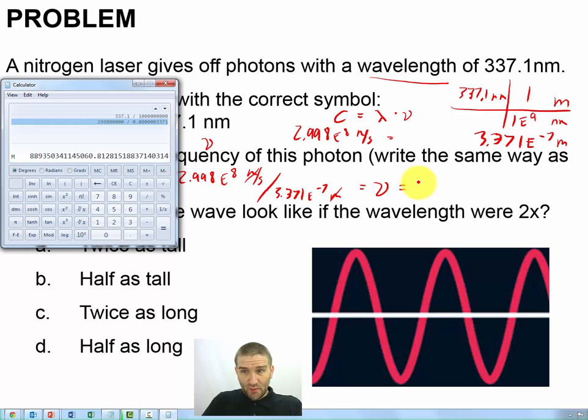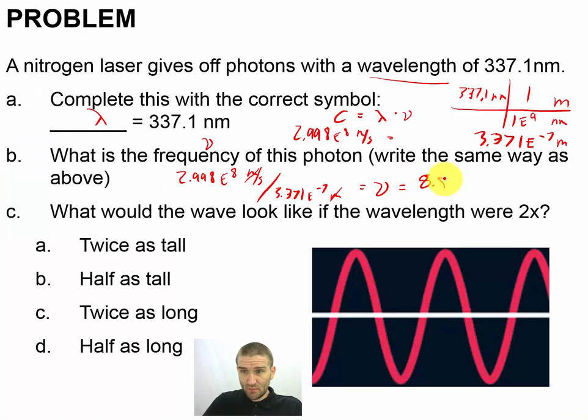So 8.893. Actually, yeah. So it's a 5, 0, 3. That means it's going to round up. So 8.894 times 10 to the 14 hertz, 1 divided by second. That's going to be our frequency for that one.